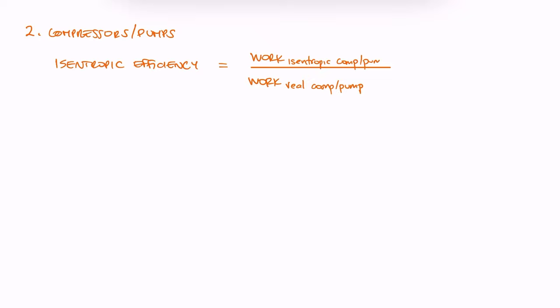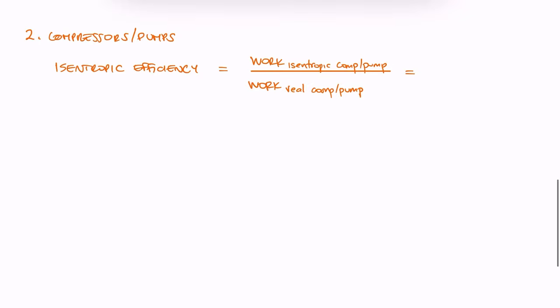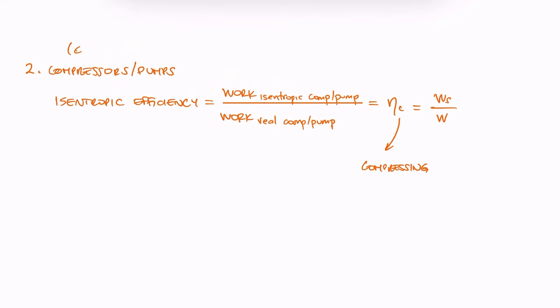Now, in the case of compressors or pumps, we just established that the isentropic efficiency expression is reversed. With the work required by a real compressor or pump in the denominator, since a real compressor or pump uses more work than the ideal isentropic case, and the work of an ideal isentropic compressor or pump on top, we give this efficiency a subscript c for compressing the fluid, gas or liquid.